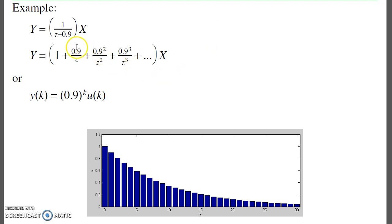If I do an expansion of 1 over z minus 0.9, I get the following. So y of k is 0.9 to the k, that's the impulse response. If I were to implement this, any filter that gives me the same impulse response would be the same filter.